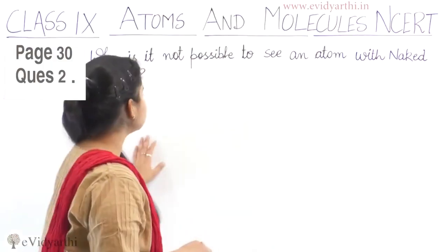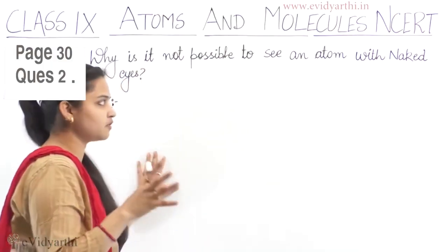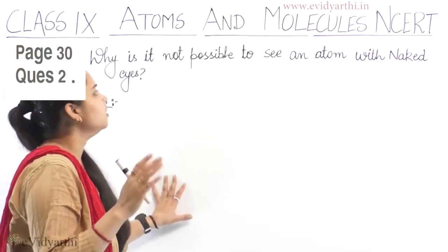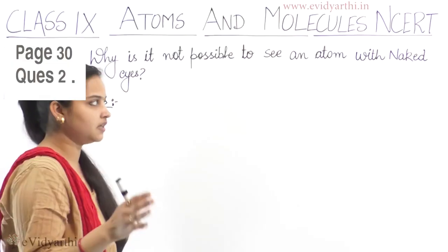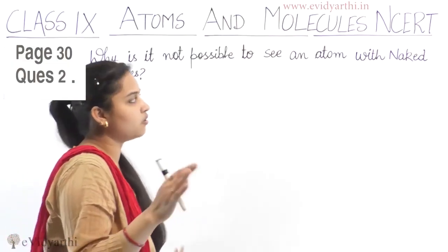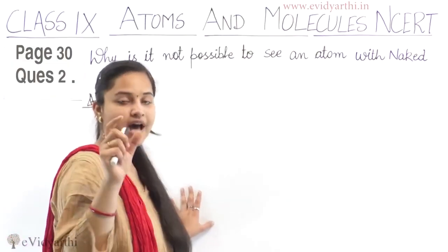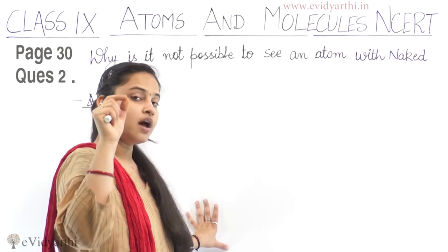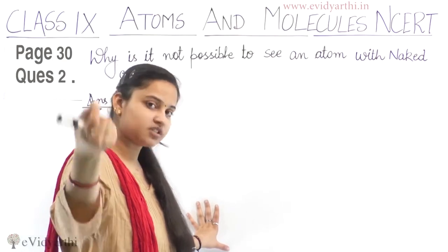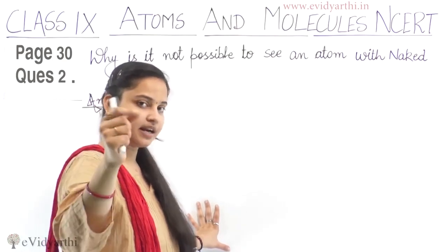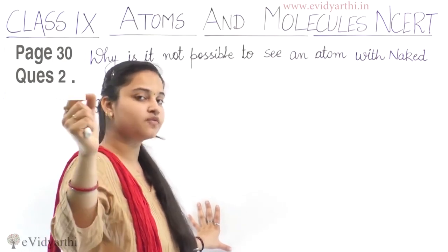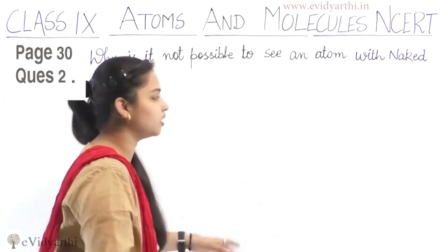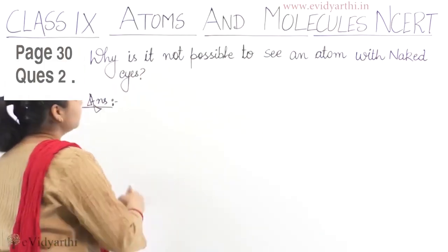So basically, the reason is that the size of atoms is very, very small, so we cannot see them with our naked eyes. Also, atoms of most elements cannot exist independently on their own.